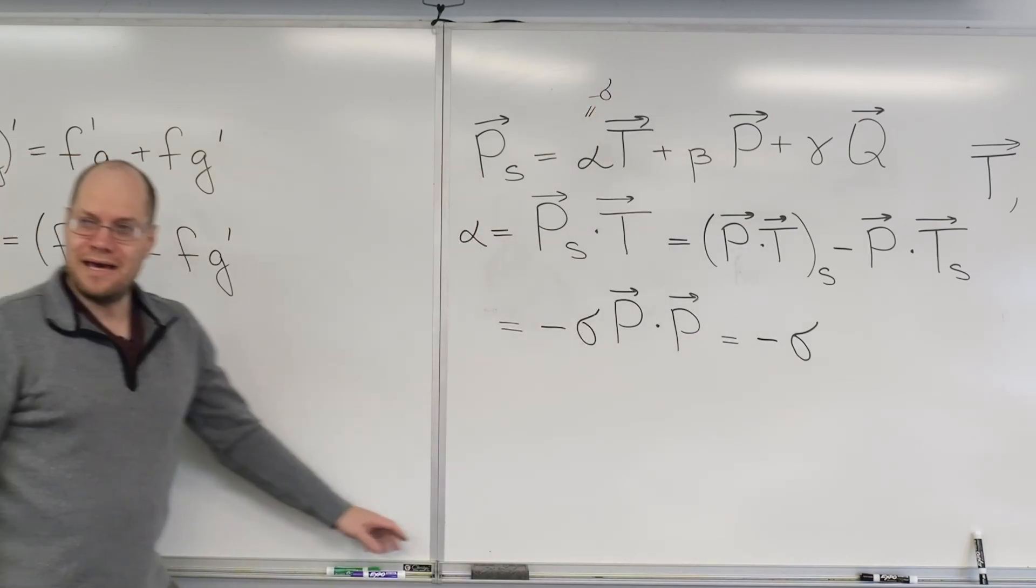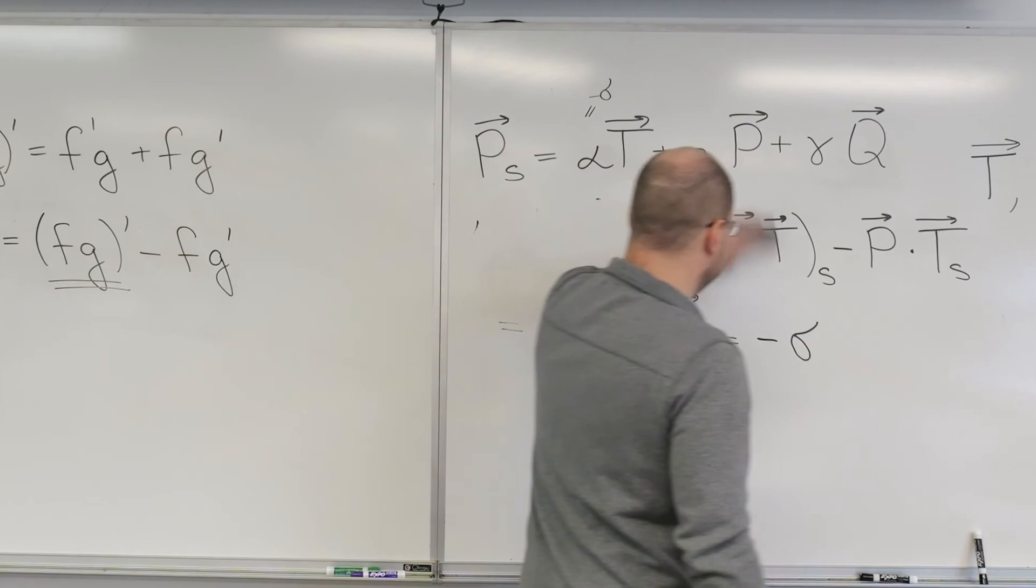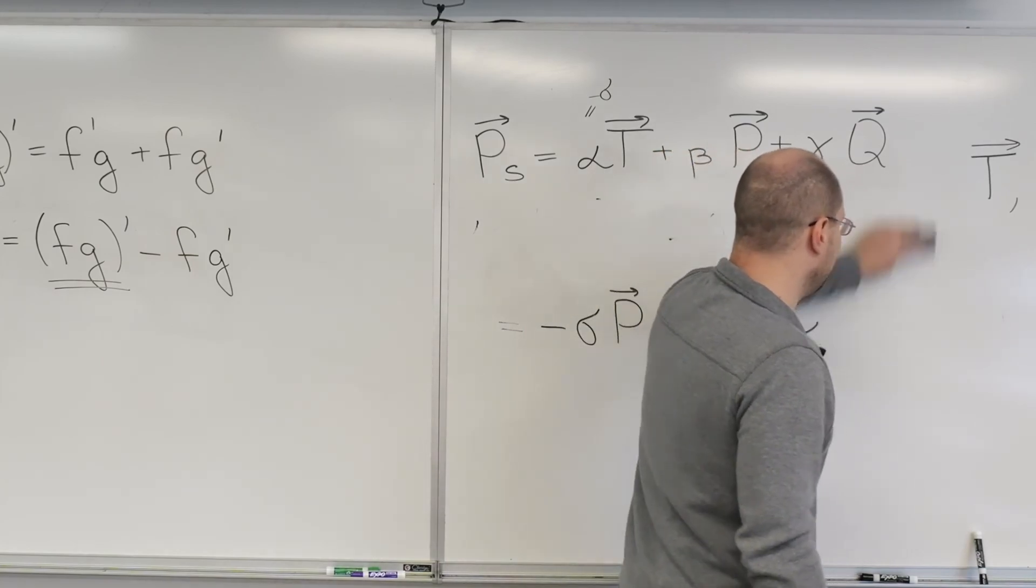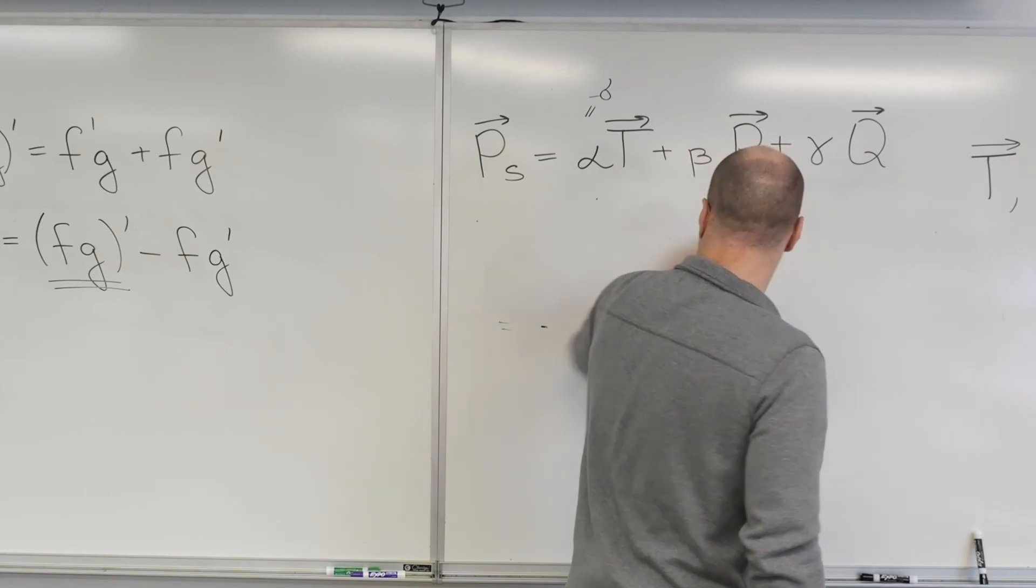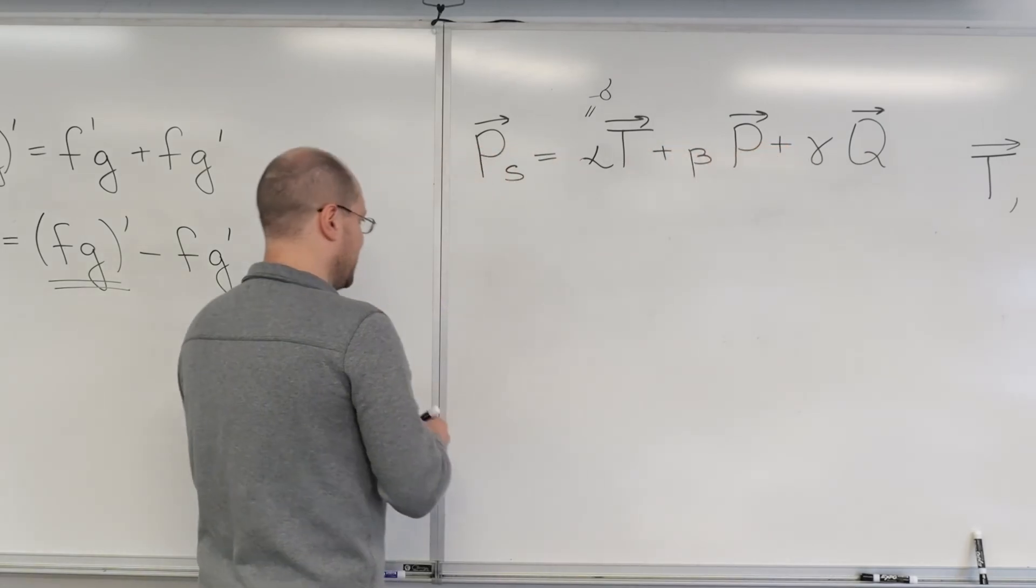Let's now do beta. We already know the answer. It will be zero. But let's just see it happen. And to get beta, of course, we need to dot both sides with P. So we have that beta,